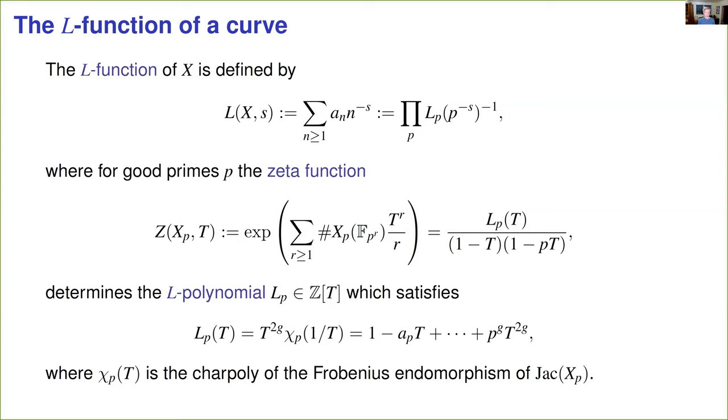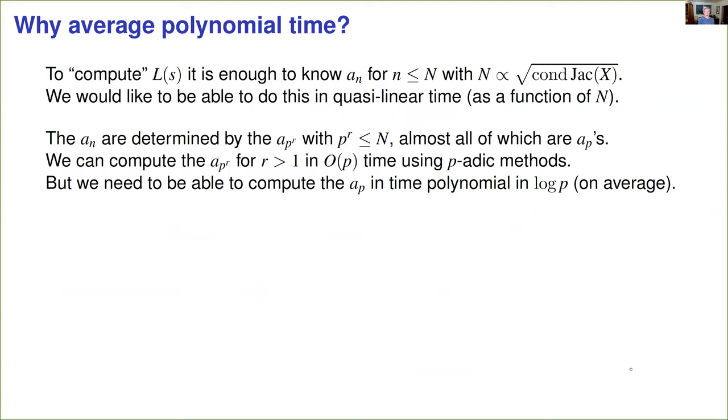Now, we would like to compute the L-function. What do I mean by that? Well, there are infinitely many Dirichlet coefficients, we're never going to compute them all, but we want to compute enough of them so that we can accurately evaluate the function at particular values of s, s = 1 for example. And in order to do that, we need to know the a_n up to a bound that's proportional to the square root of the conductor of the Jacobian. Now we would like to be able to do this as efficiently as possible, and the best we could hope for is a running time that's quasi-linear in our bound n. We have n Dirichlet coefficients to compute, so we really can't hope to do any better than that.